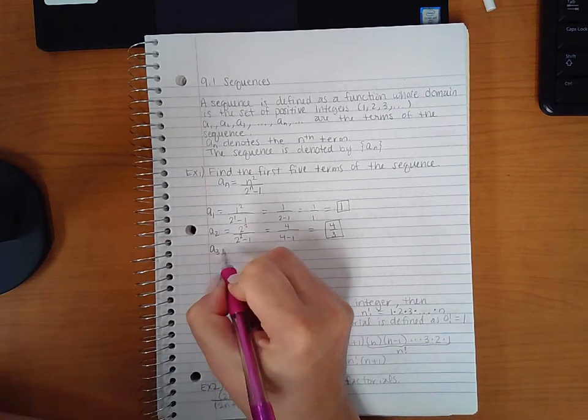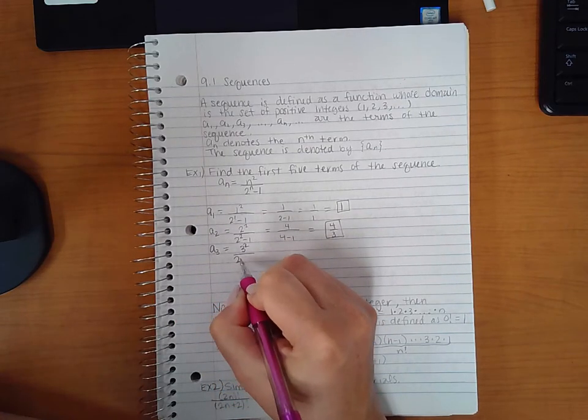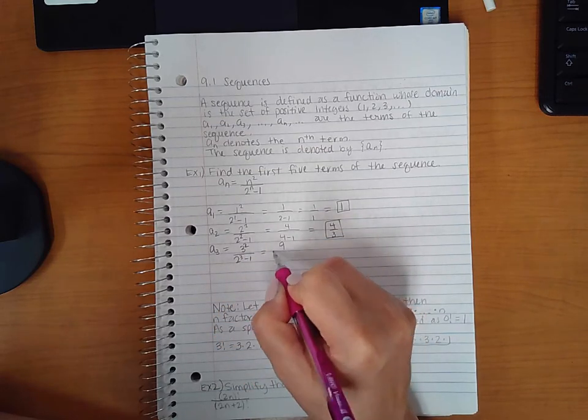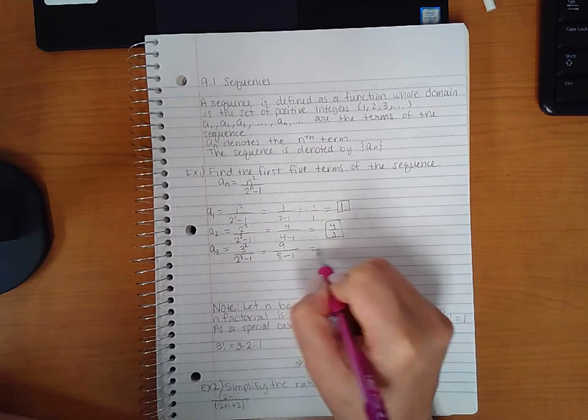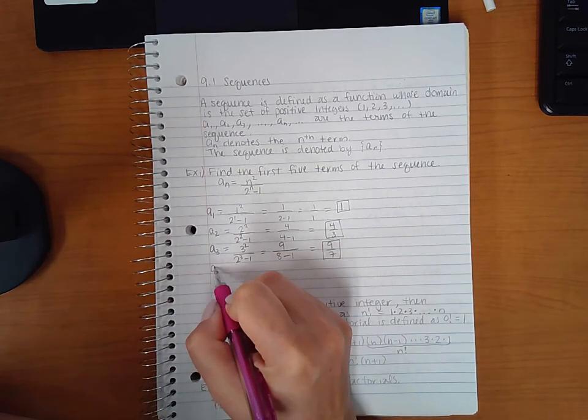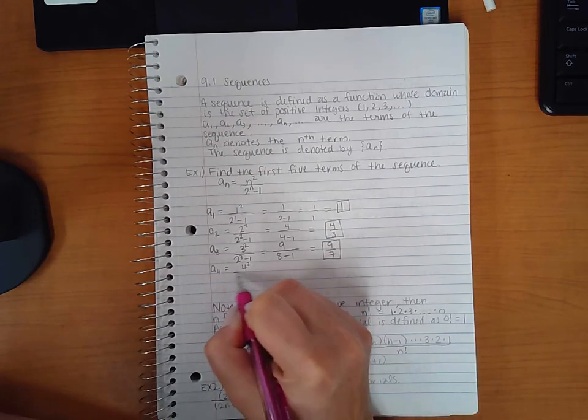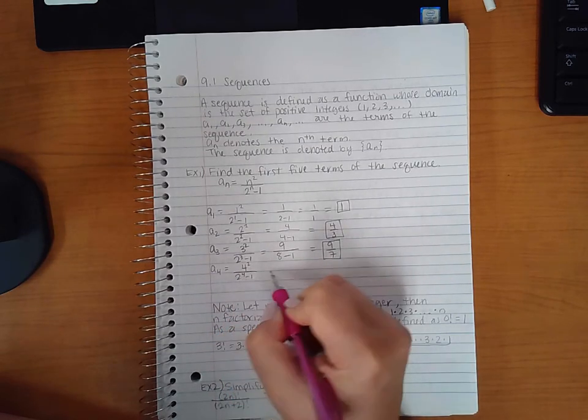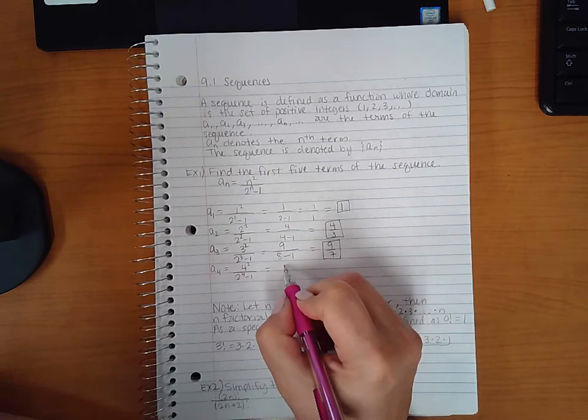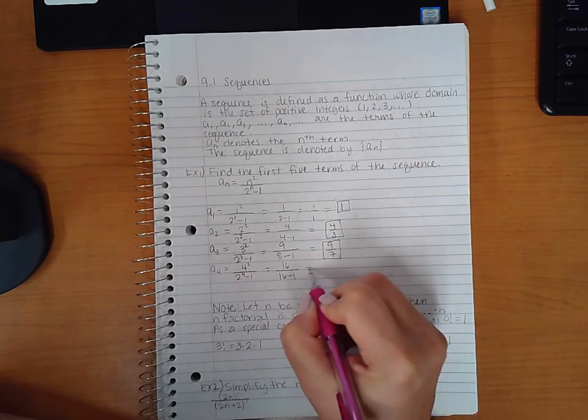For the third term, we get 9 over 8 minus 1, which is 9 sevenths. Here we're going to plug in 4 for n and we're going to get 16 over 16 minus 1.